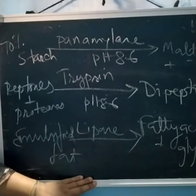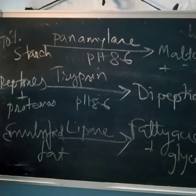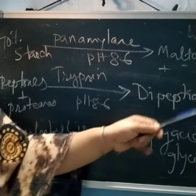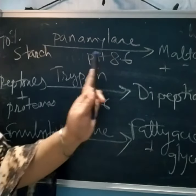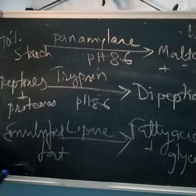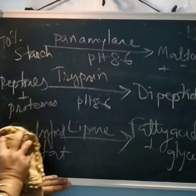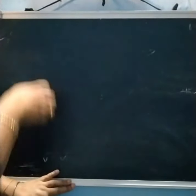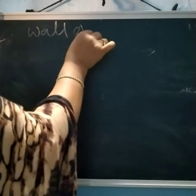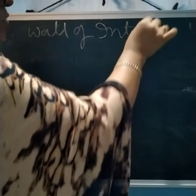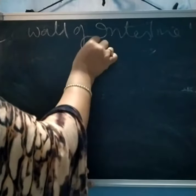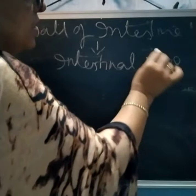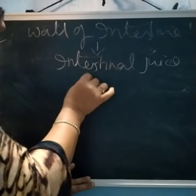However, we still have not obtained the ultimate products: we have maltose but not glucose, and dipeptides but not amino acids. So now the wall of the intestine produces a special juice called intestinal juice, which contains a number of enzymes.